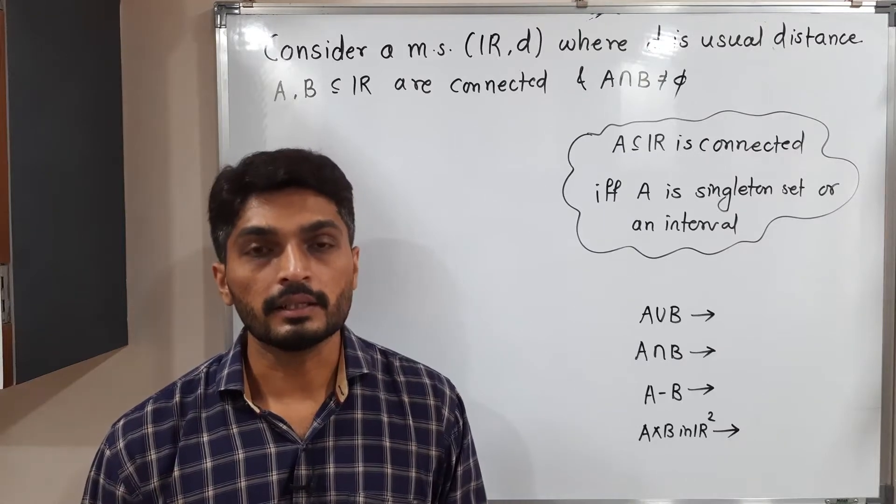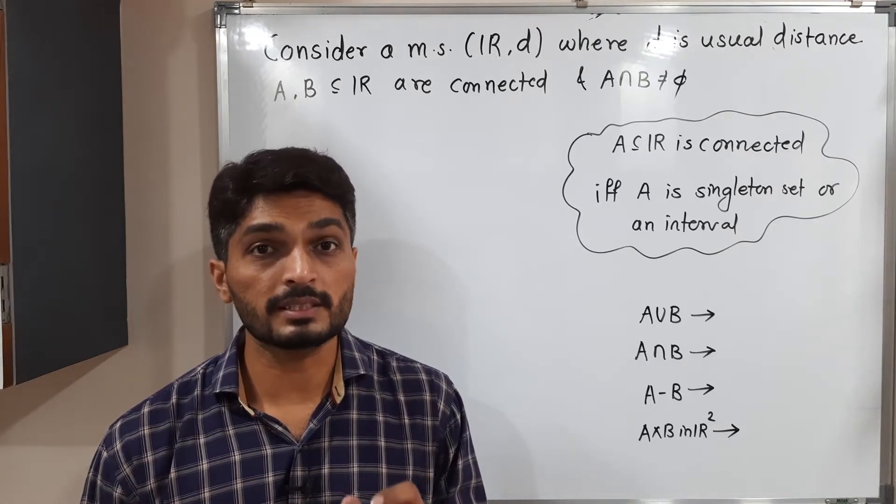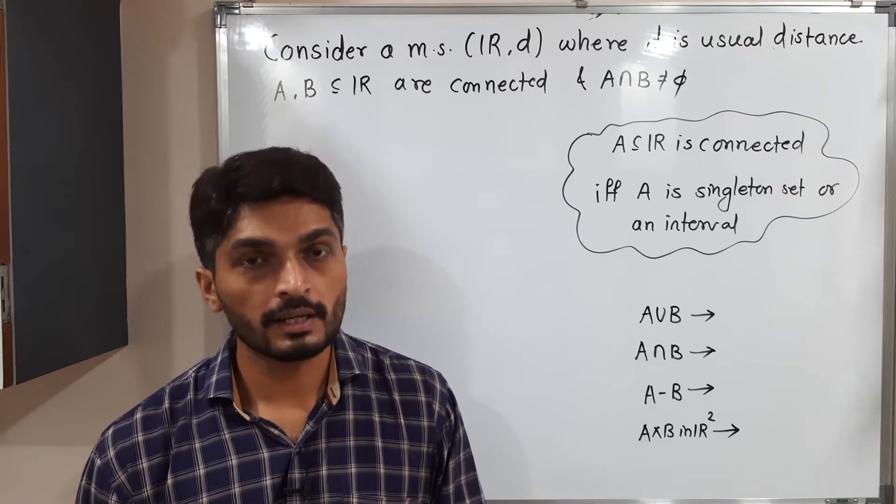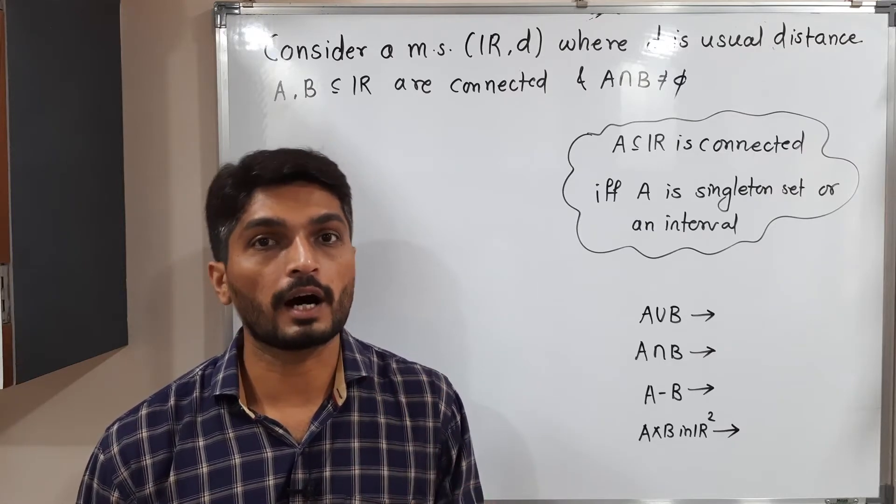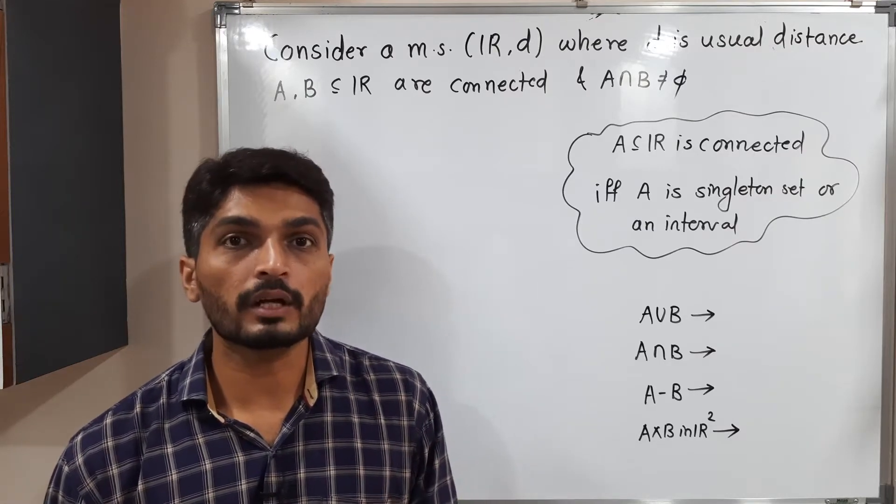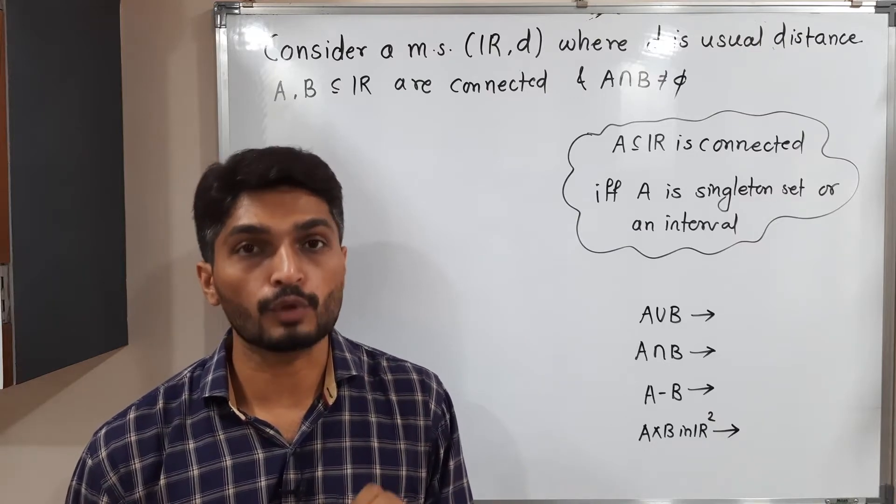Let us discuss this example. In this example, we have a metric space Rd where d is the usual distance and we have two subsets of R, A and B.